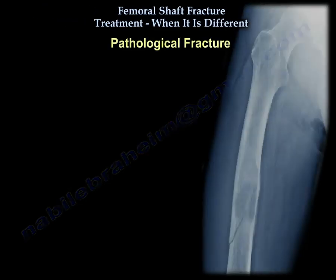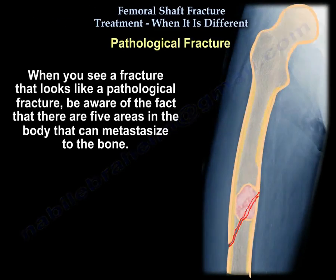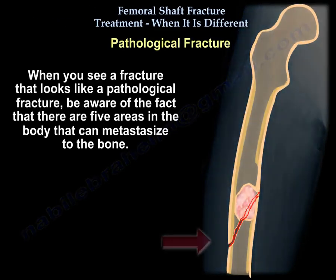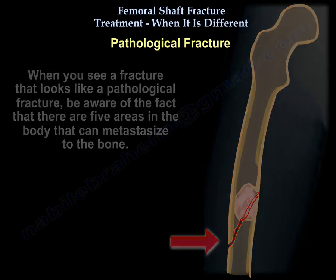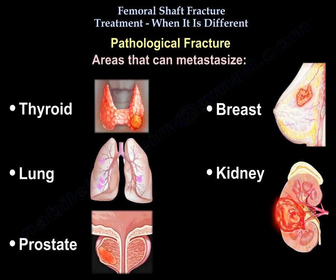Another type is the pathological fracture. When you see a fracture that looks like a pathological fracture, be aware that there are five areas in the body that can metastasize to bone. These are thyroid, breast, lung, kidney, and prostate.